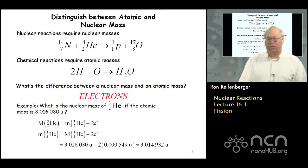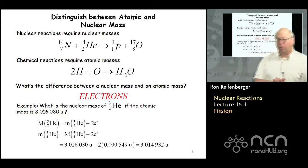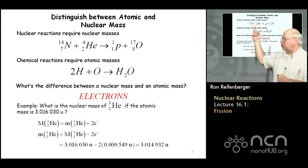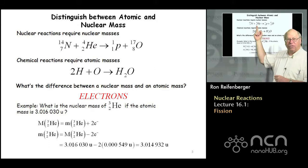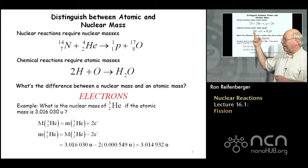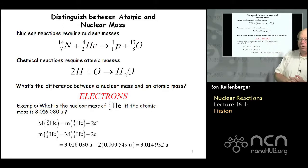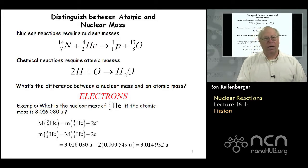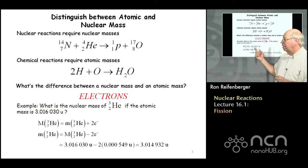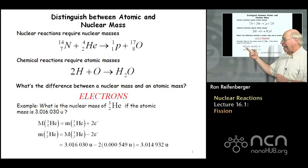It's important in this lecture to distinguish between atomic and nuclear masses. A nuclear reaction is written in one format and a chemical reaction in another. To analyze nuclear reactions you need nuclear masses; to analyze chemical reactions you need atomic masses. The difference between a nuclear mass and the atomic mass of an atom is just the number of electrons contained in that atom. I use capital M to represent atomic masses and small m to represent nuclear masses.